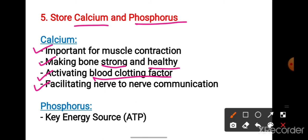Phosphorus is a key energy source. It is involved in energy transfer mechanisms, including the generation of ATP (adenosine triphosphate).